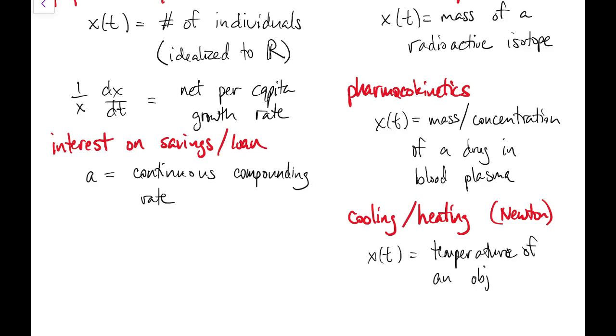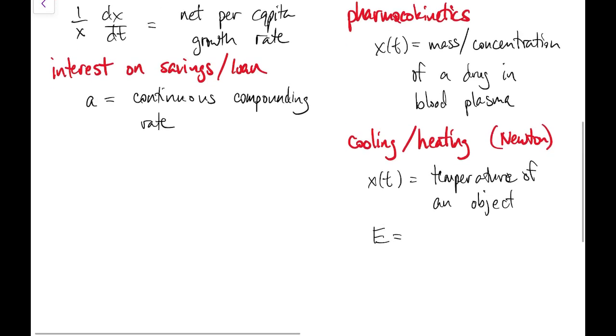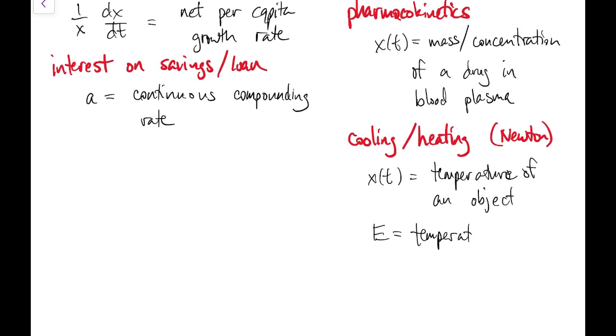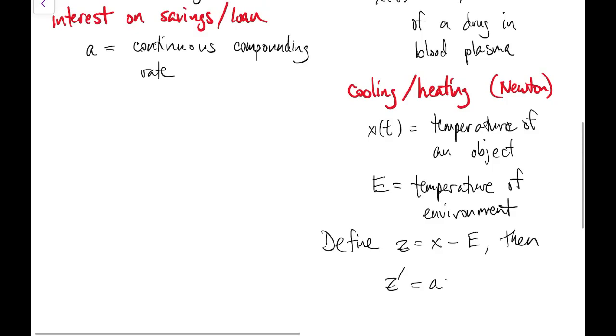The object is in a room or an environment at a constant temperature, E. And then we can define a new variable, z, to be the difference between x and E, the difference between the temperature of the object and its environment. And then z satisfies a decay equation.